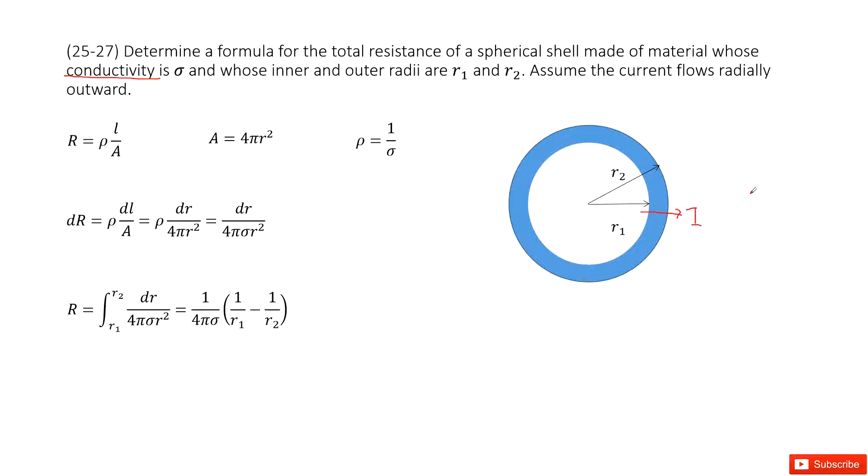We can consider the resistivity. Rho is given, so it's straightforward to find the resistance. You use rho times L divided by A.